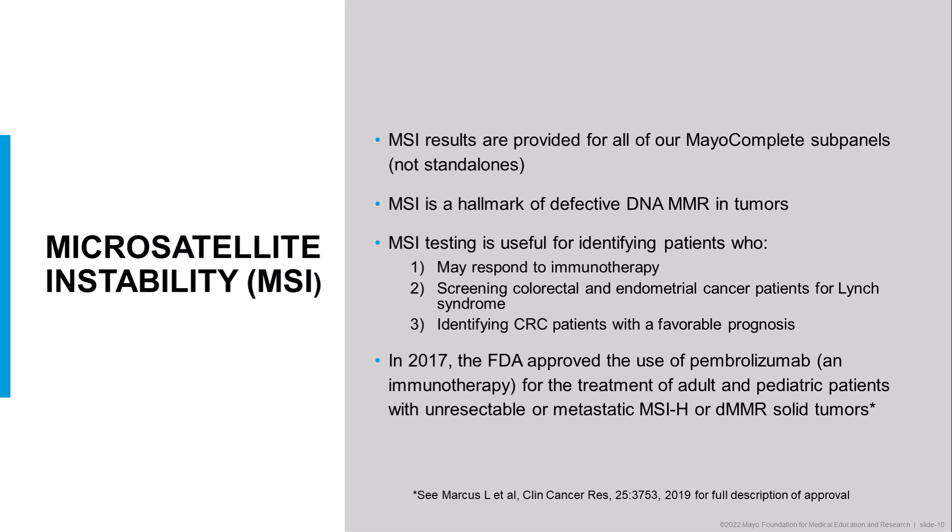As you all know, microsatellite instability is a hallmark of defective DNA mismatch repair in tumors, and testing for it has several clinical utilities shown here. Probably first and foremost, by testing for microsatellite instability you can predict which patients may respond to immunotherapy. That's important because in 2017, the FDA approved the use of pembrolizumab for the treatment of adult and pediatric patients with unresectable or metastatic solid tumors with microsatellite instability. In addition, MSI testing is helpful for screening colorectal cancer and endometrial cancer patients for Lynch syndrome, and it can help identify colorectal cancer patients that may have a more favorable prognosis.